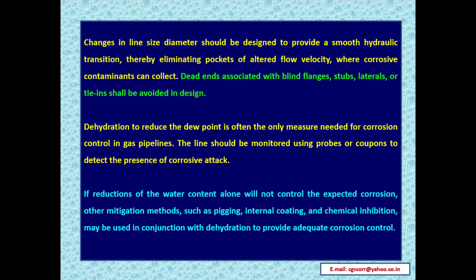Changes in pipe size or diameter should be designed to provide a smooth hydraulic transition, eliminating pockets of altered flow velocity where corrosive contaminants can collect. Dead ends associated with blind flanges, stubs, laterals, or tie-ins shall be avoided. Dehydration to reduce the dew point is often the only measure needed for corrosion control in gas pipelines. Lines should be monitored using probes or coupons. If reducing water content alone will not control corrosion, other methods such as pigging, internal coating, and chemical inhibitors may be used in conjunction with dehydration.